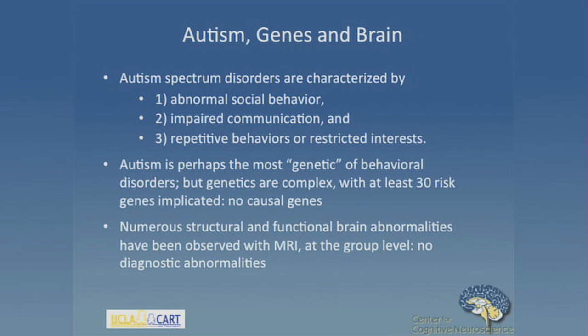When I wrote this slide, Dan Geschwind, who I work with closely, said there were at least 30 autism risk genes. But last time I spoke to him a few days ago, he said there were 150. So there are lots and lots of risk genes associated with autism. None of them are causal, and none of them have big effect sizes, which makes studying the genetics of autism extremely difficult.